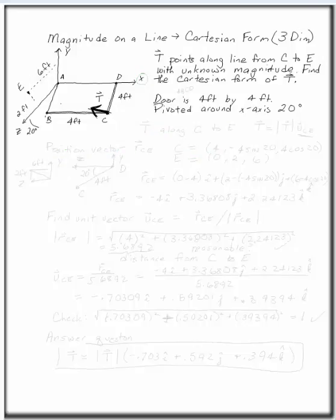Vector T points along a line from C to E with unknown magnitude. Find the Cartesian form of T.